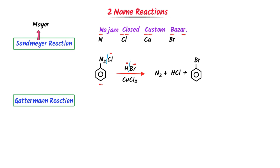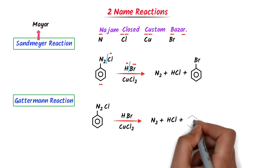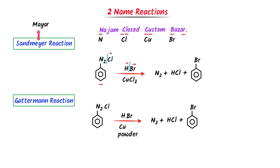In the Gattermann reaction, I rewrite the Sandmeyer reaction. Then I cut only copper chloride and replace it with copper powder. This gives the Gattermann reaction.